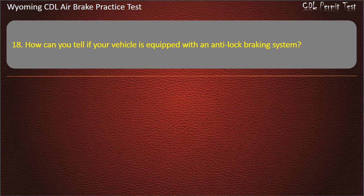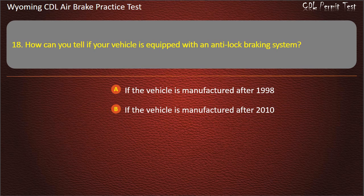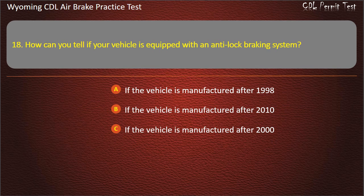Question 18. How can you tell if your vehicle is equipped with an anti-lock braking system? If the vehicle is manufactured after 1998. If the vehicle is manufactured after 2010. If the vehicle is manufactured after 2000. ABS is still optional. Answer: If the vehicle is manufactured after 1998.